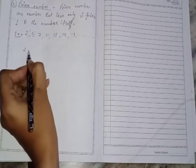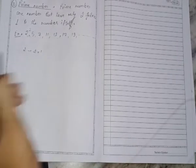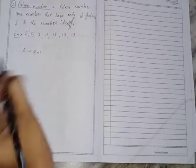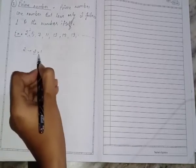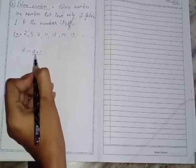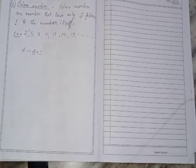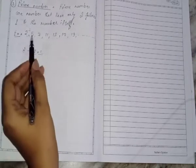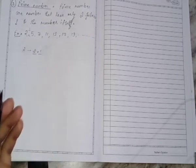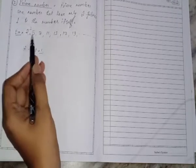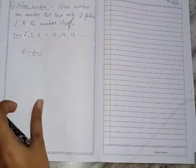For example, take 2. We can write 2 as 2 × 1, meaning 2 is divisible by 2 and 1 only. So 2 and 1 are the factors of 2, and 2 is a prime number. Similarly, 3, 5, and 7 all come in the table of themselves and the table of 1 only, so they have only two factors — that is why they are prime numbers.